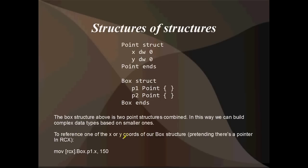And to reference one of the X or Y coordinates of our Box structure, pretending there's a pointer in RCX, we'd say mov RCX.Box.P1.X. So you've got to say RCX.Box to say that RCX is pointing to a Box structure, then .P1 to say which element of the Box you want to reference, and then .X to say which element of the element of the Box you want to reference. So that's the X just here of P1. Or you could say RCX.Box.P2.X, and that would be point P2, P2's X value. It's hard to describe, but it's pretty easy. I'm pretty sure that makes sense.